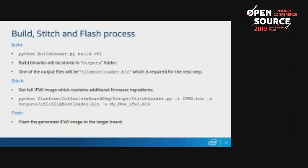To build, stitch, and flash: build the Slim Bootloader with the command 'build_loader build' and your platform name — the binary will be stored in the output folder along with a Slim Bootloader binary file required for stitching. For stitching, get a full IFWI image from Intel or read it from your board containing additional firmware ingredients, then stitch with the stated command. Finally, flash the generated IFWI image to your target board, and basic mainboard porting is done.